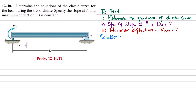Let's start with the solution. The equation of the elastic curve can be defined using: EI · d²v/dx² = M. We will find this moment at coordinate x.